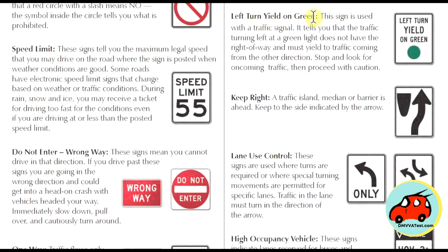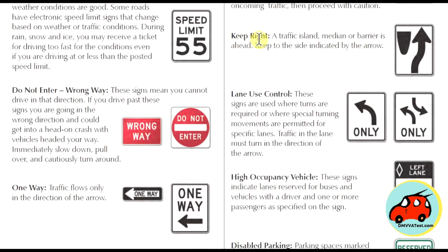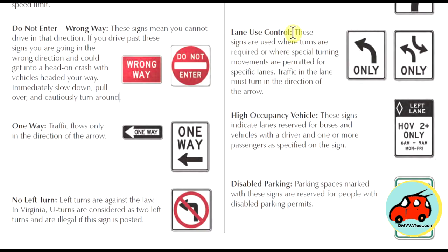Left turn yield on green is used with a traffic signal. It tells you that traffic turning left at the green light does not have the right of way — you must yield to traffic coming from the other direction. Stop and look for oncoming traffic, then proceed with caution. A keep right sign means a traffic island, median, or barrier is ahead, so keep to the side indicated by the arrow. Lane use control signs are used where turns are required or where special turning movements are permitted for specific lanes — traffic in the lane must turn in the direction of the arrow.